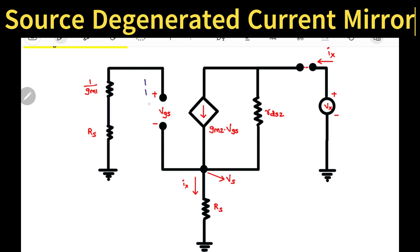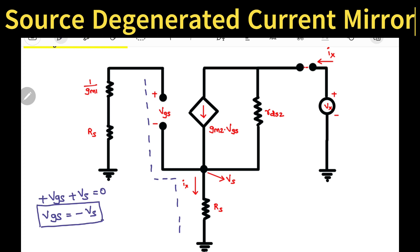Let us try to find the voltage here, along the path from here to ground. If you see, I am getting plus VGS plus VS equal to 0. So here VGS will be minus VS. This is one result we got. Also, there is a current IX which is flowing through this particular RS, so we can write VS = IX × RS. Next, because of external supply voltage Vx there is a flow of current IX.